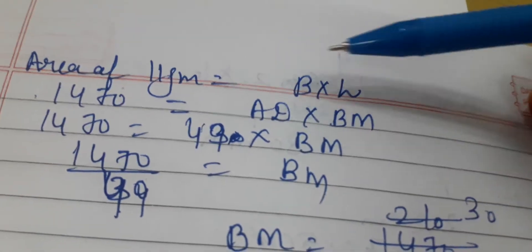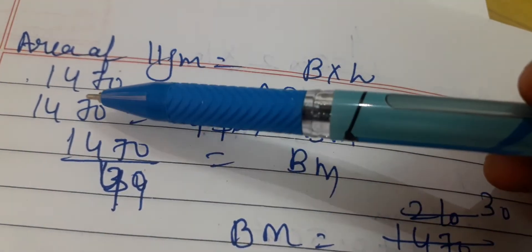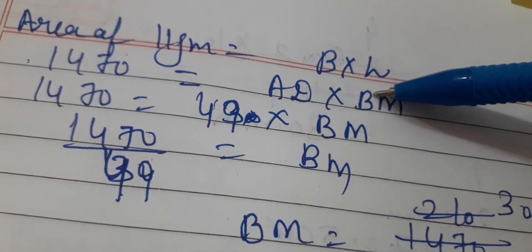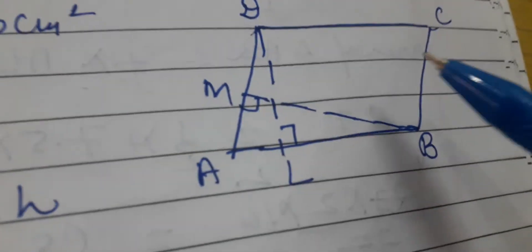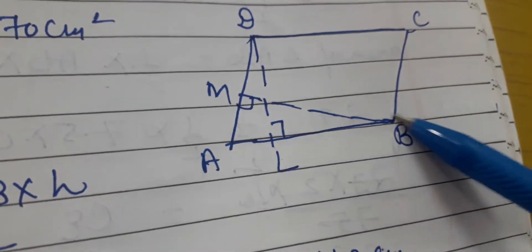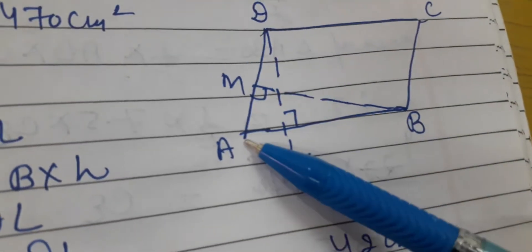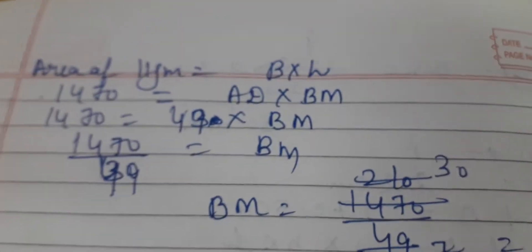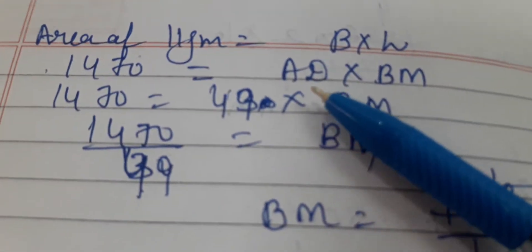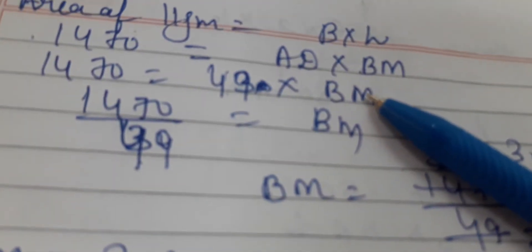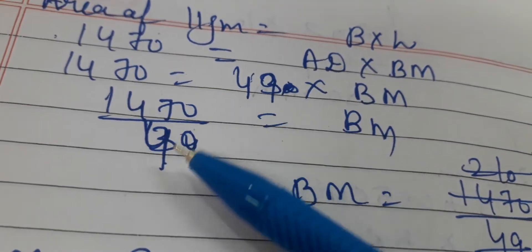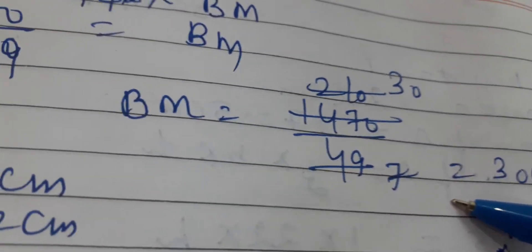Again using the formula, area of parallelogram equals base into height. Area is the same 1470, now equal to AD multiplied by BM. AD is the base and BM is the height to find. AD is given as 49 centimeters, so BM equals 1470 divided by 49. After cancelling, BM equals 30 centimeters. So on base AD of 49 cm, the height BM is 30 centimeters.